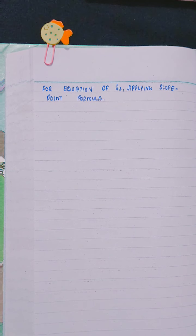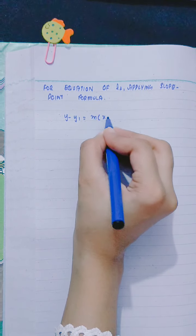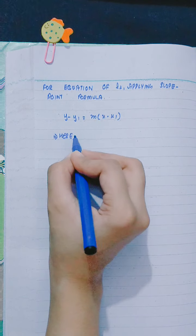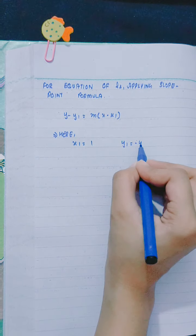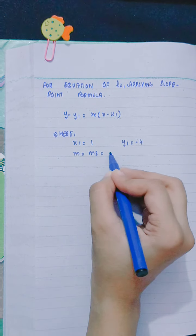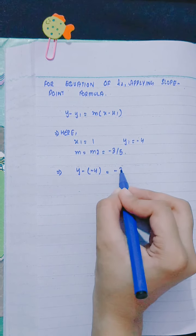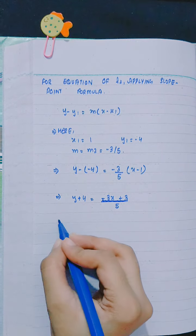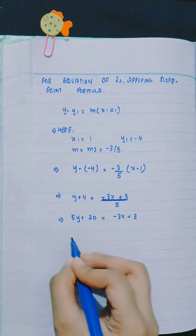Now, for equation of L2, applying slope point formula: y minus y1 equals m2 times (x minus x1). Here, x1 is 1, y1 is -4, and m2 equals -3/5. So y minus (-4) equals -3/5 times (x minus 1). 5y plus 20 equals -3x plus 3.